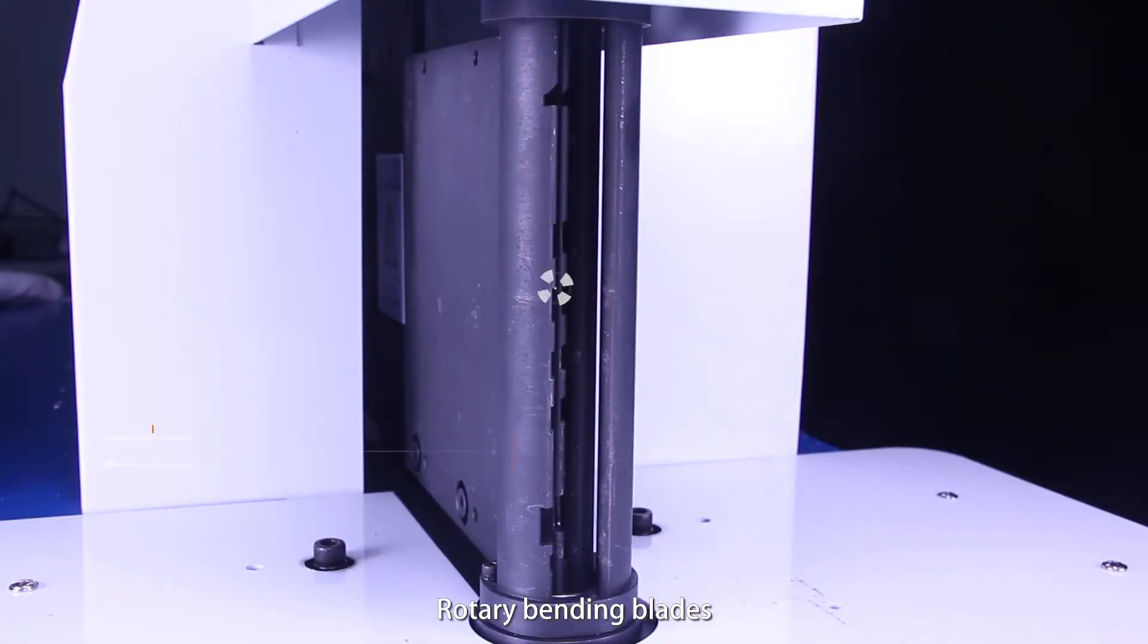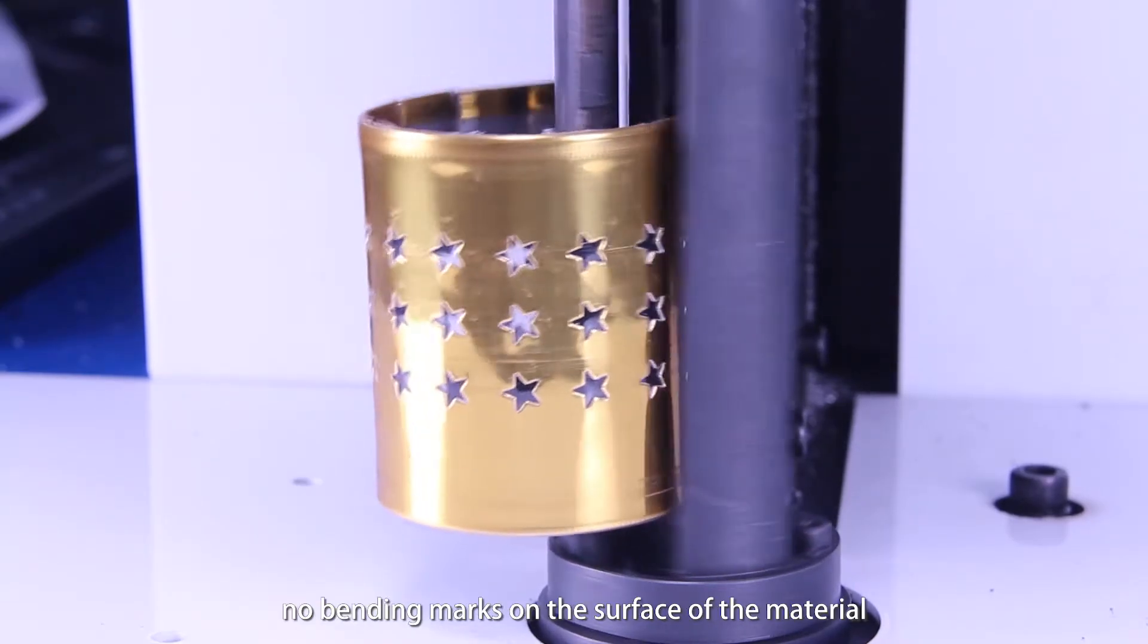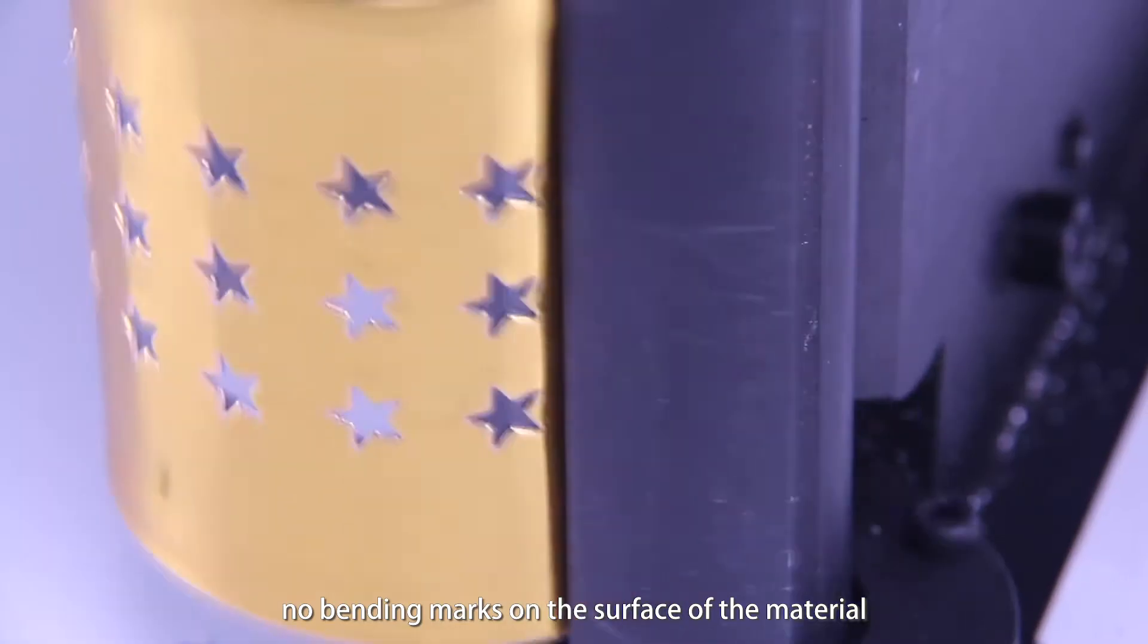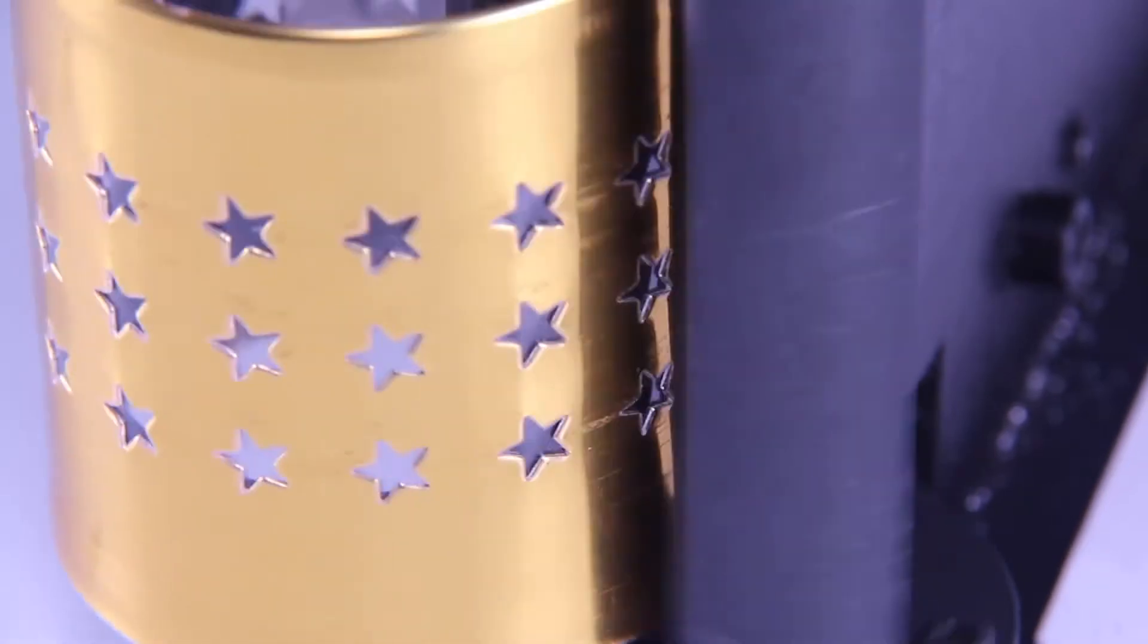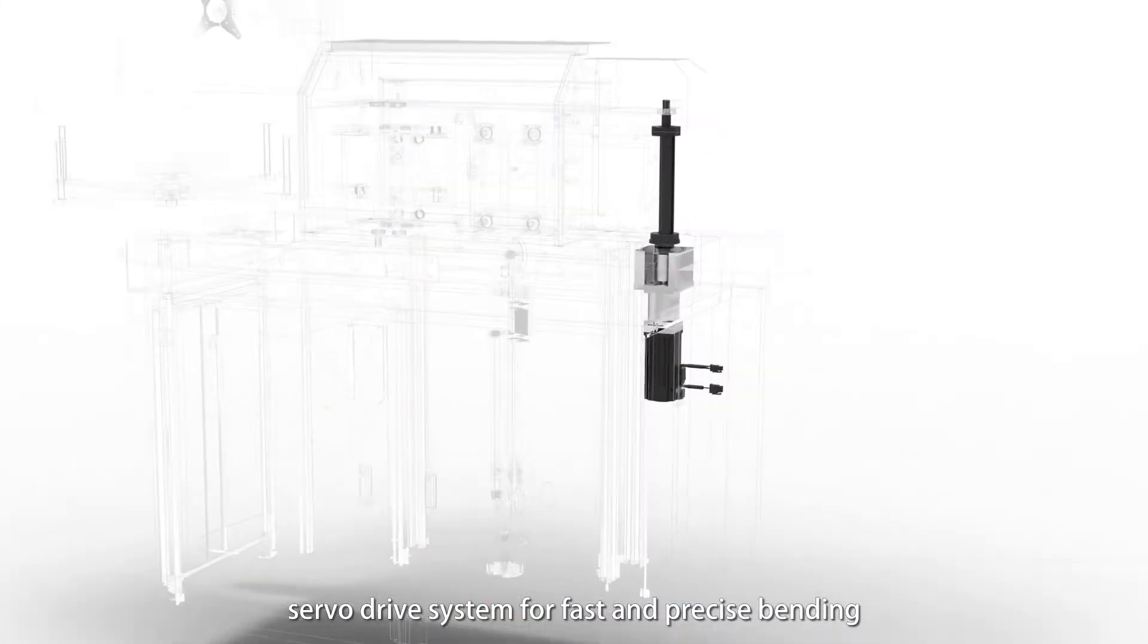Rotary bending blades: rounded process of material contact. No bending marks on the surface of the material. Servo drive system for fast and precise bending.